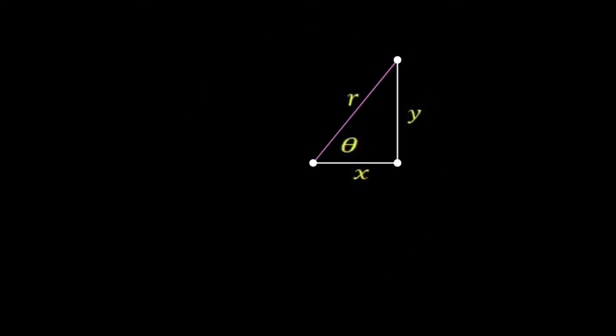The y distance is called the opposite, the x distance is called the adjacent, and the r distance is called the hypotenuse.